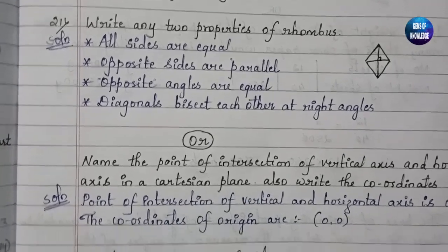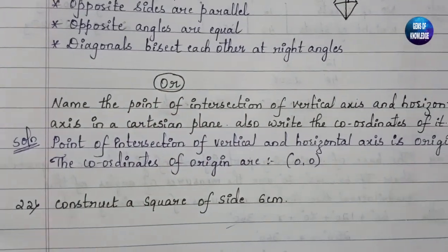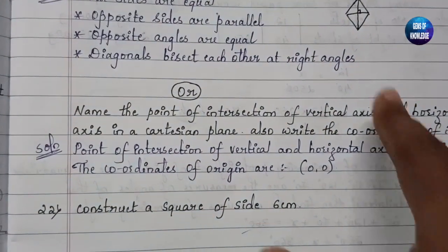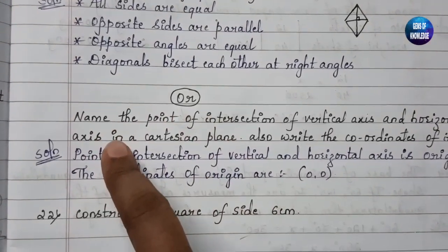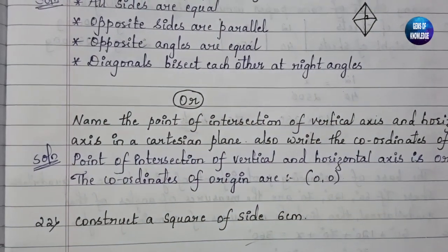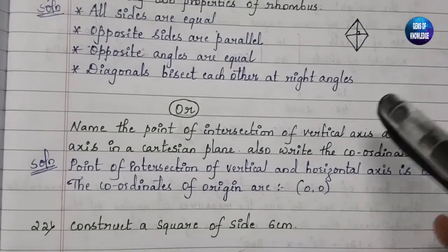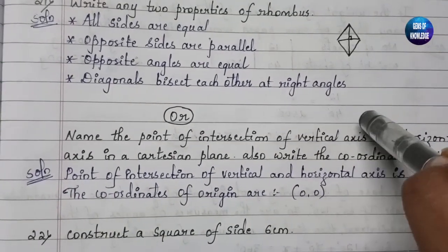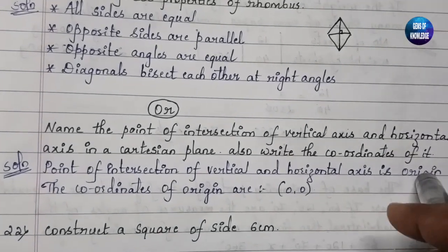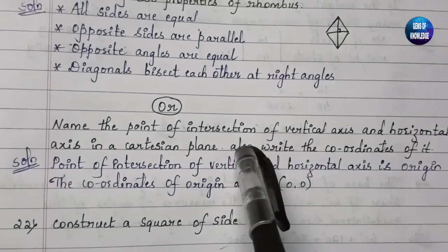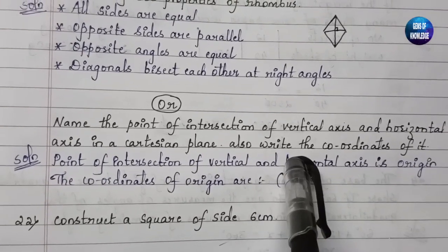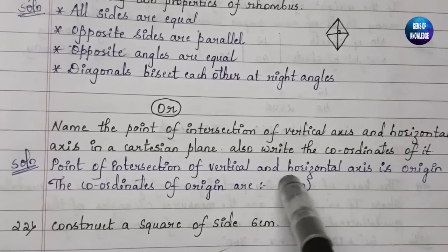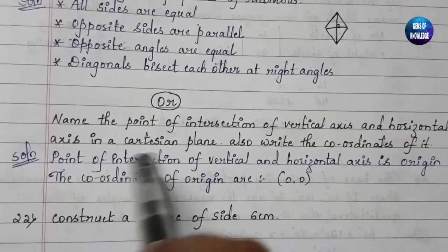Next question: Name the point of intersection of the vertical axis and horizontal axis in the Cartesian plane. The Cartesian plane is the graphical coordinate system. The point of intersection of both axes is called the origin. You also have to write its coordinates: the x-coordinate is zero and the y-coordinate is zero, so the coordinates of the origin are (0, 0).